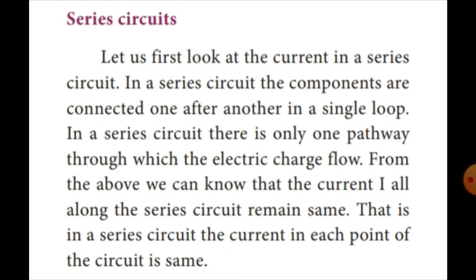In a series circuit, the components are connected one after another in a single loop. There is only one pathway through which the electrical charge flows. From this, we can know that the current I all along the series circuit remains the same. That is, in a series circuit, the current at each point of the circuit is the same.